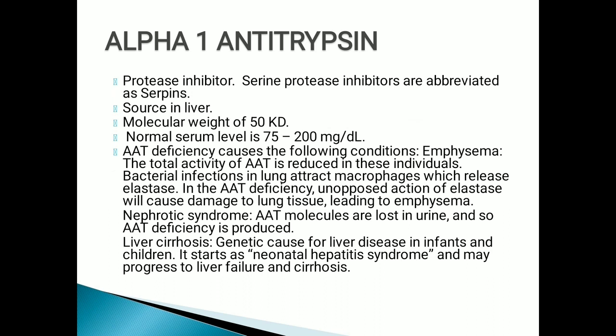Arterioles become dilated and bronchioles become constricted, giving an obstructive pathology in the lung. Alpha-1 antitrypsin deficiency combined with lung pathology is called Goodpasture syndrome. It is also the main genetic cause of neonatal hepatitis syndrome, where infants start having liver failure and liver cirrhosis.